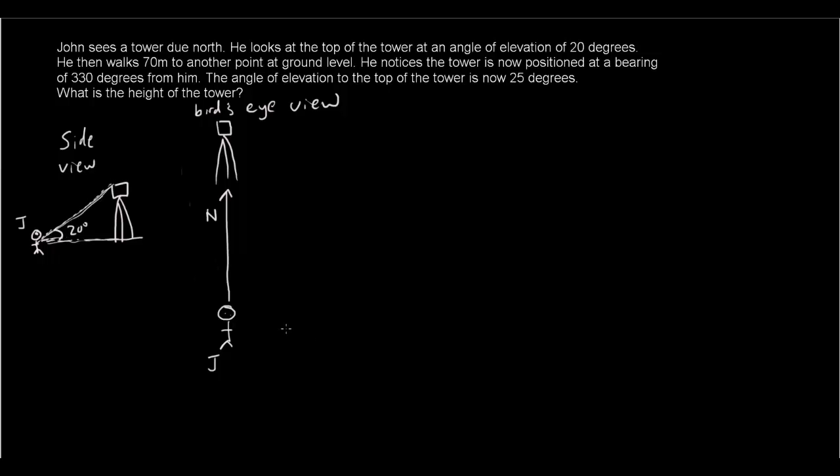And obviously this is the right angle. John then walks 70 meters to another point at ground level. So he then walks 70 meters to another point. So we don't know where it is, but let's just say 70 meters down this way. So this is 70 meters. So this is John's new location, which I'm going to say J2. J2 is John's second location.